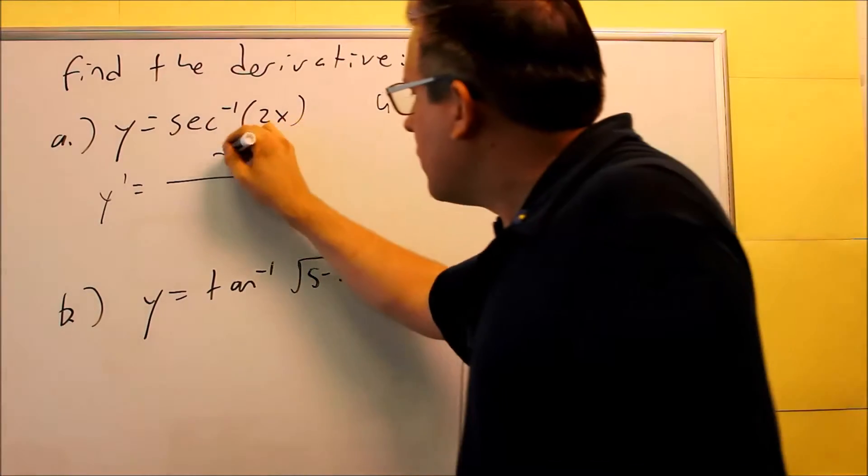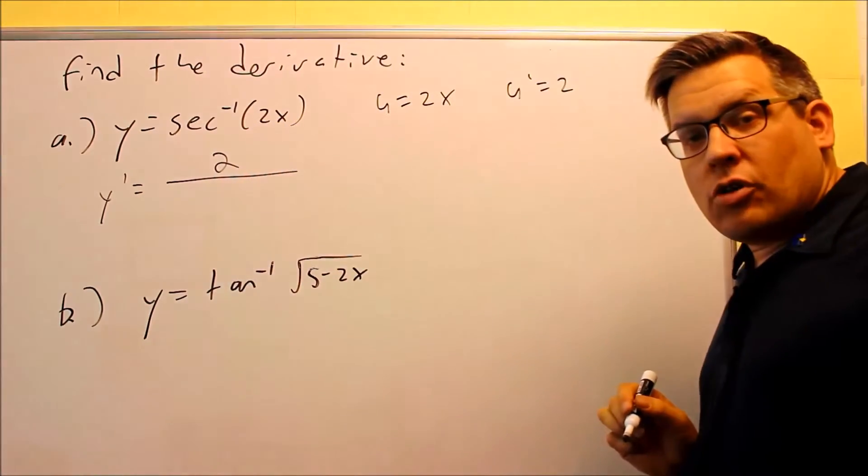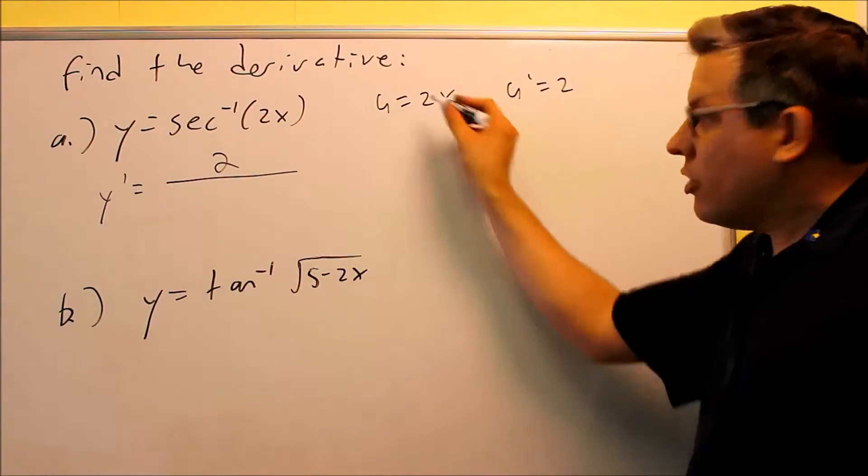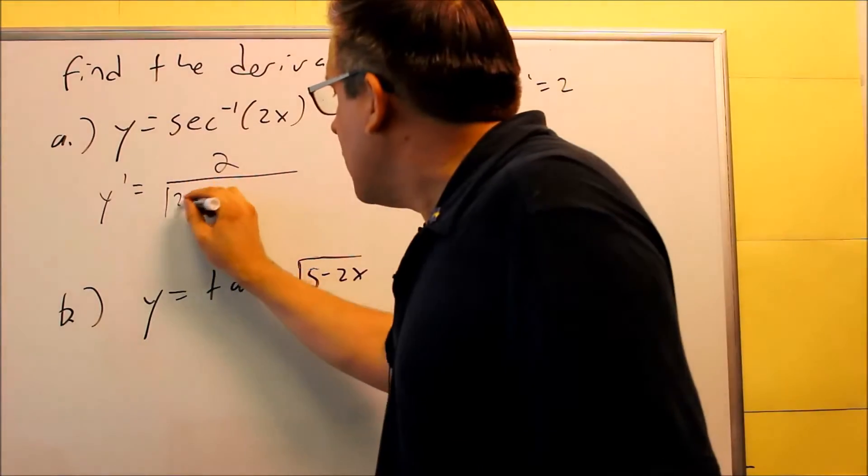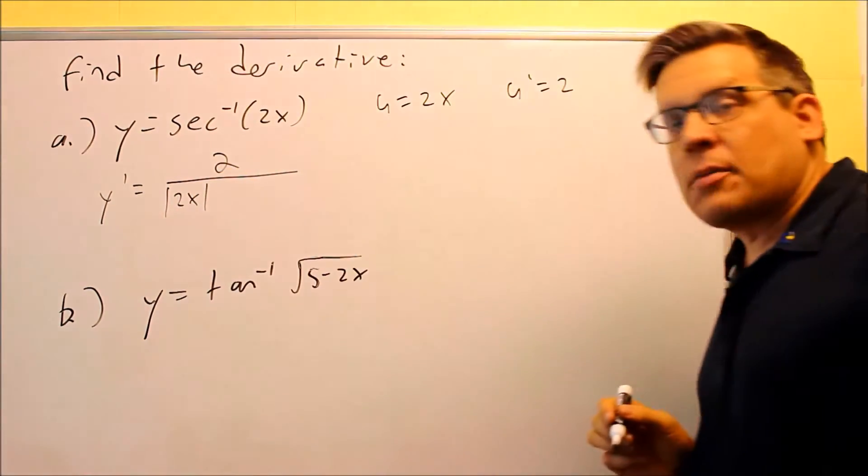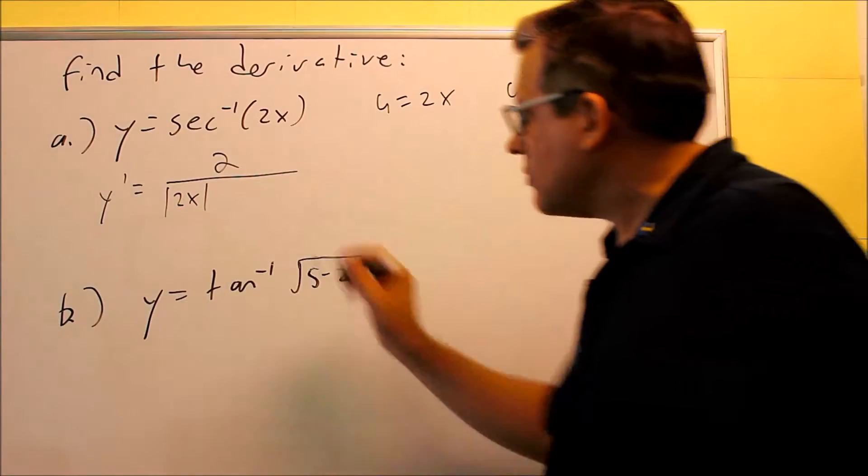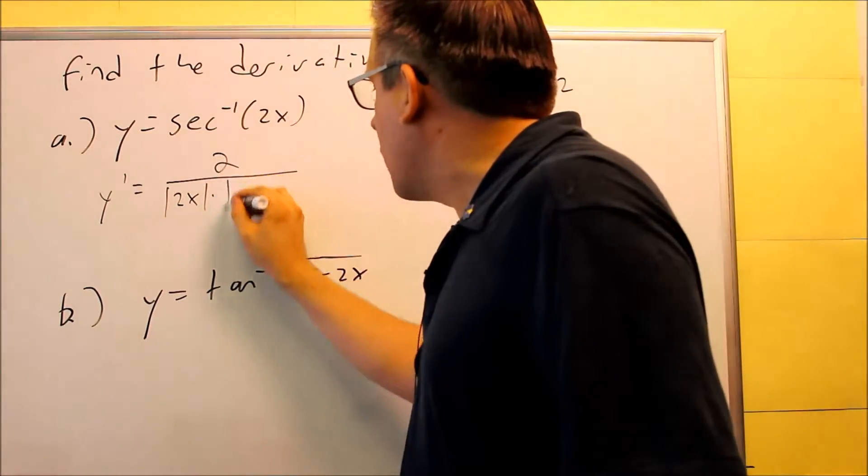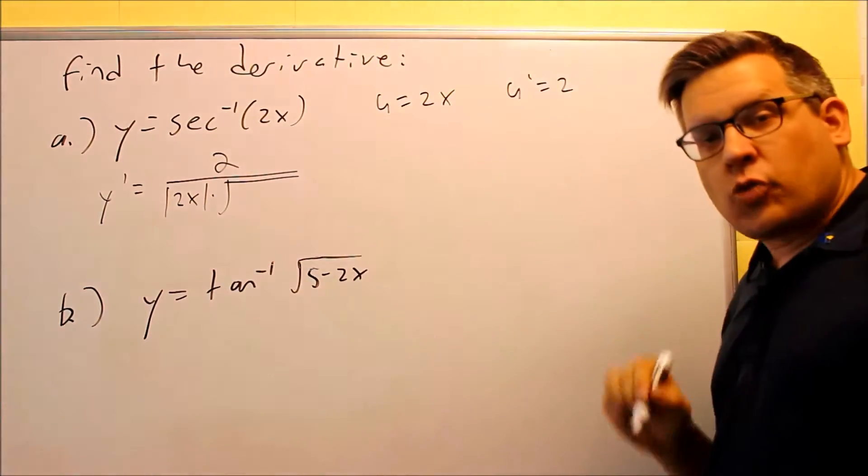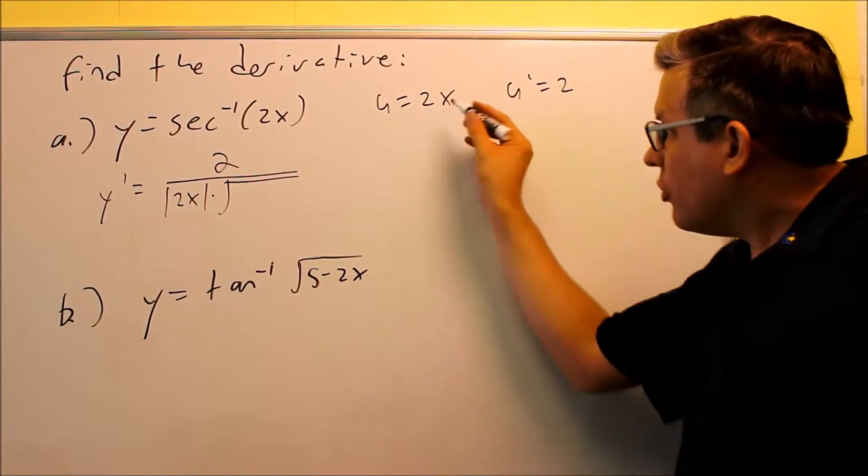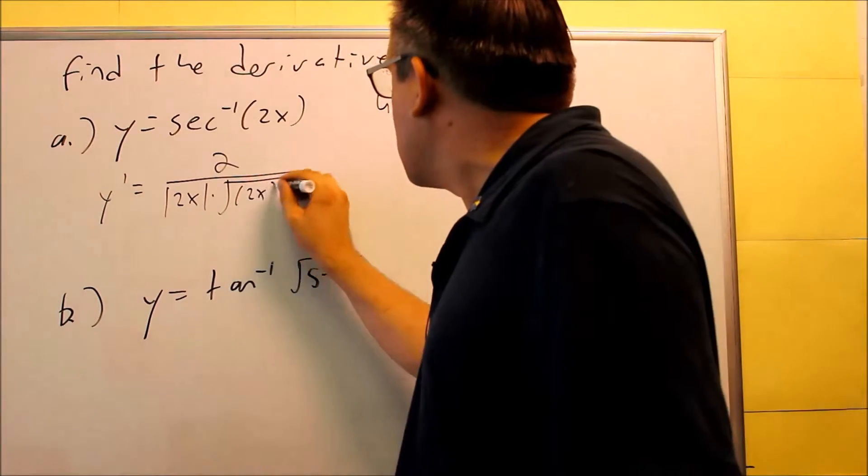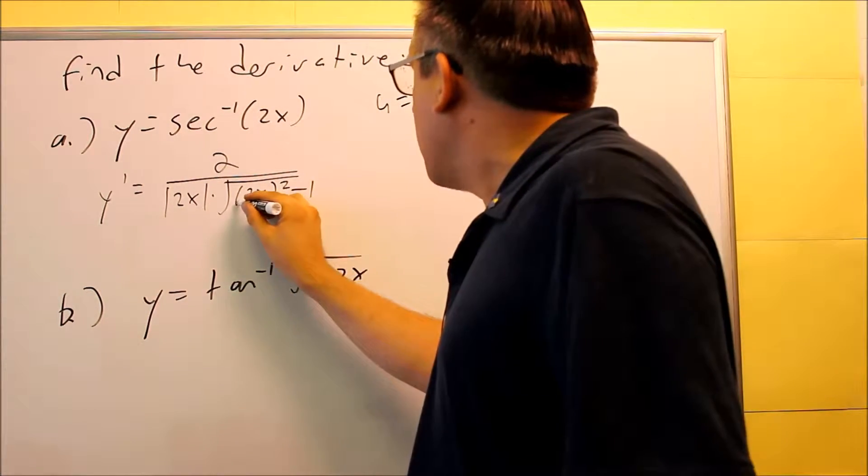We have u-prime, that's 2 on top. Down below you have the absolute value of u, that's going to be absolute value of 2x. And then we have times the square root, u squared minus 1. Your u is 2x, so I have 2x squared minus 1.